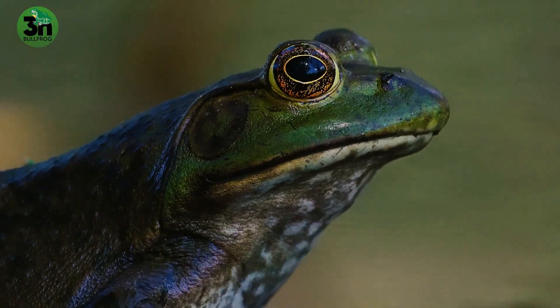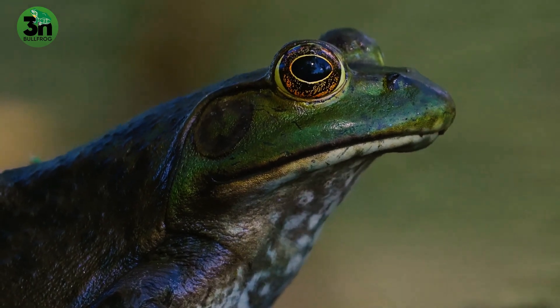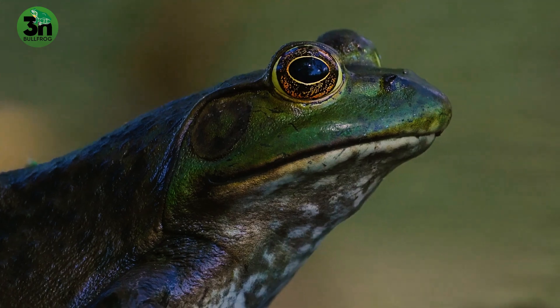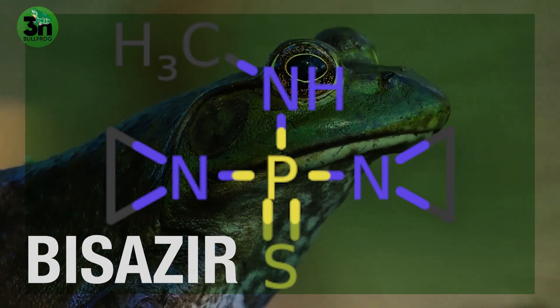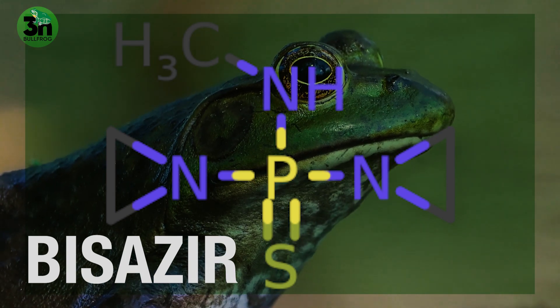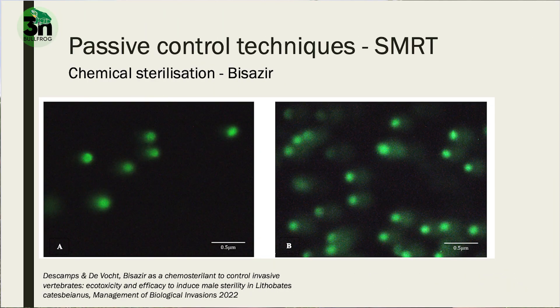One technique you can use is the use of sterile individuals to control the reproduction success in your population. One way to sterilize those individuals is the use of chemicals. We tried to use the chemical bisazir, as it is used for sea lamprey in the Great Lakes, to make sure the sperm is fragmented in the male individuals. We did that and it worked with the American bullfrog.